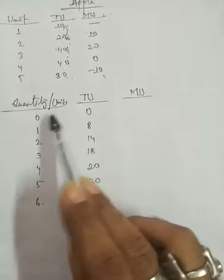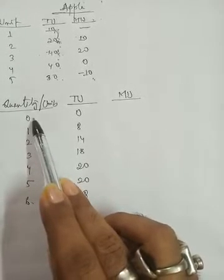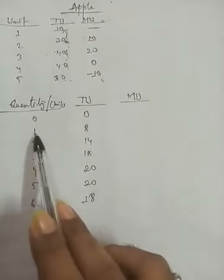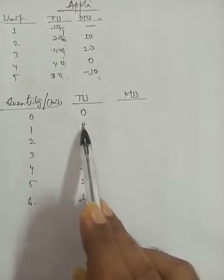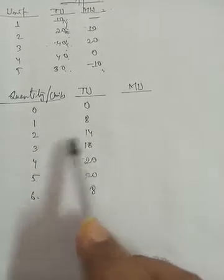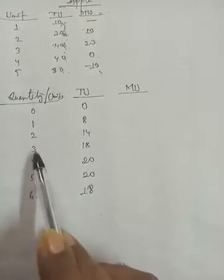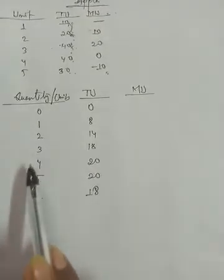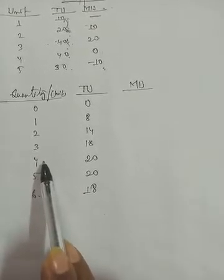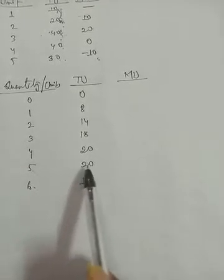When we have not taken any goods — 0 units — our total utility is 0. When we consume the 1st good, our total utility is 8. The 2nd good gives total utility of 14, the 3rd good gives 18, the 4th good gives 20, and the 5th good also gives total utility of 20.